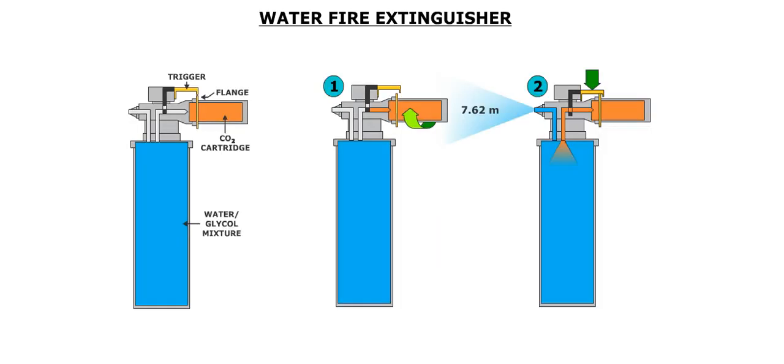The water fire extinguisher can be discharged by releasing the compressed air from the cartridge. This is done by rotating the handle. This causes the cartridge to advance forward, and the seal of the cartridge to be punctured. Squeezing the trigger releases the compressed air in the bottle, and the content of the bottle is discharged.